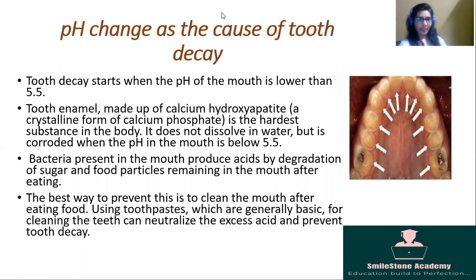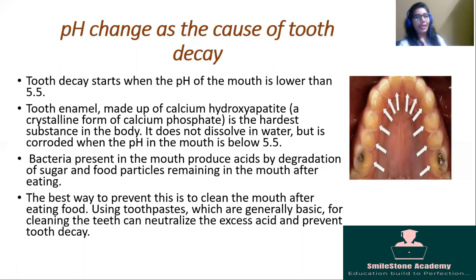Let us start. Tooth decay starts when the pH of the mouth is lower than 5.5. When the mouth's pH decreases below 5.5, extra acid is produced in our mouth. You know very well that when pH level decreases, acid increases. So acid increases, and due to the effect of that acid, your tooth decay starts.